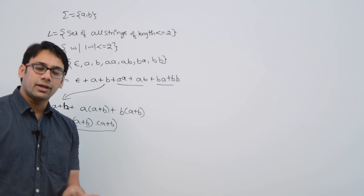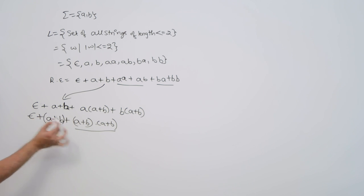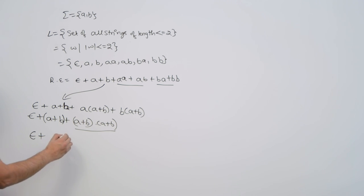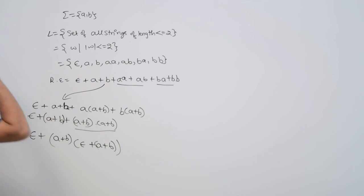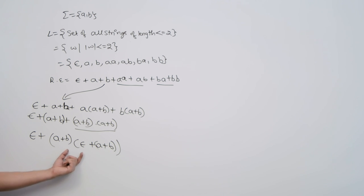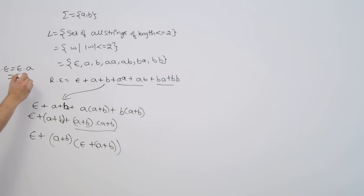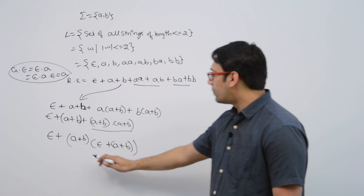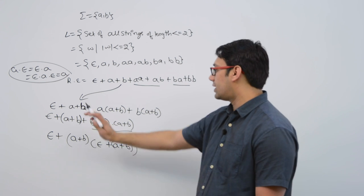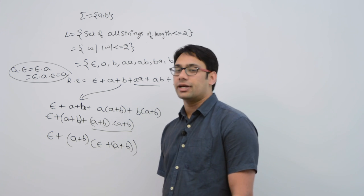Now, can we do something better than this? You can use brackets and take (a + b) as a common factor. So it can be represented by: epsilon + (a + b)(epsilon + (a + b)). Note that if you concatenate anything with epsilon, you get the same thing — for example, a·epsilon = epsilon·a = a. So epsilon does not make any change. If you open these brackets, (a + b) concatenated with epsilon gives (a + b), and (a + b) concatenated with (a + b) gives strings of length 2.